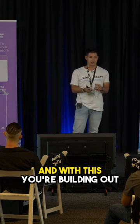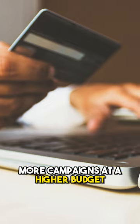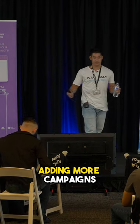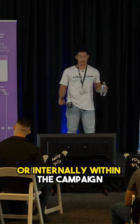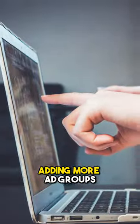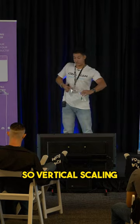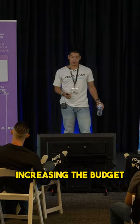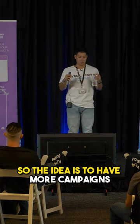Think of it like building a city. Vertical scaling means making the buildings taller — increasing the budget. Horizontal scaling means adding more buildings — adding more campaigns, or internally within a campaign, adding more ad groups.